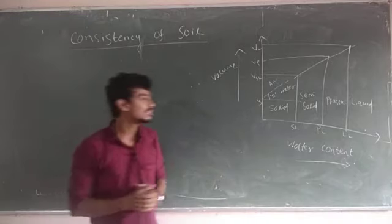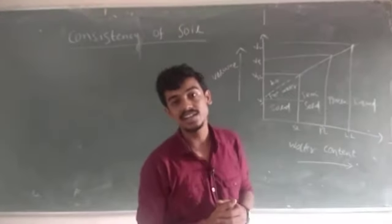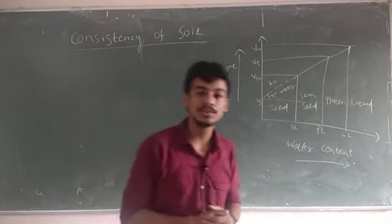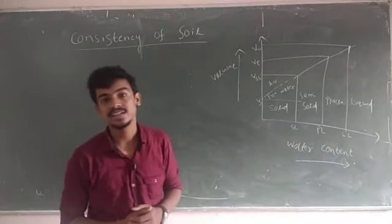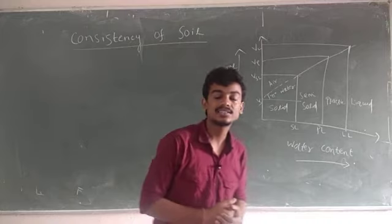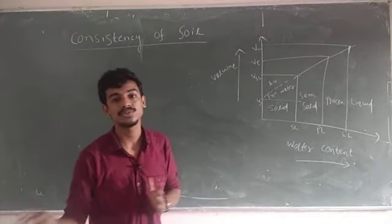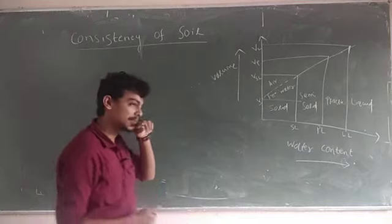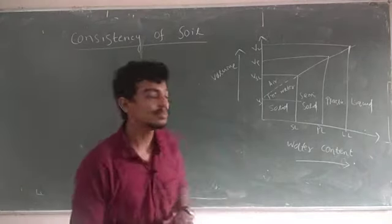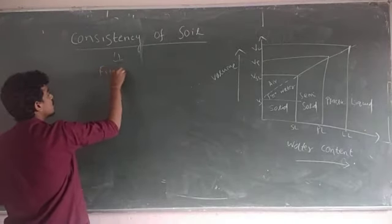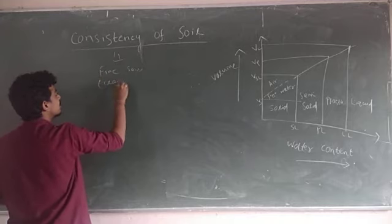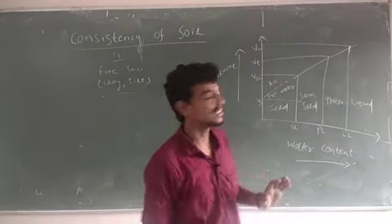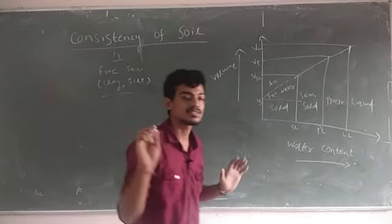Consistency is the property by which soil can be deformed from one state to another. Our soil exists in different states: solid, semi-solid, plastic, and liquid. How our soil gets deformed depends upon the water content. This is studied in consistency of soil. Consistency term is generally used for fine-grained soil, not for coarse-grained soil. Fine-grained soil examples are clay and silt.